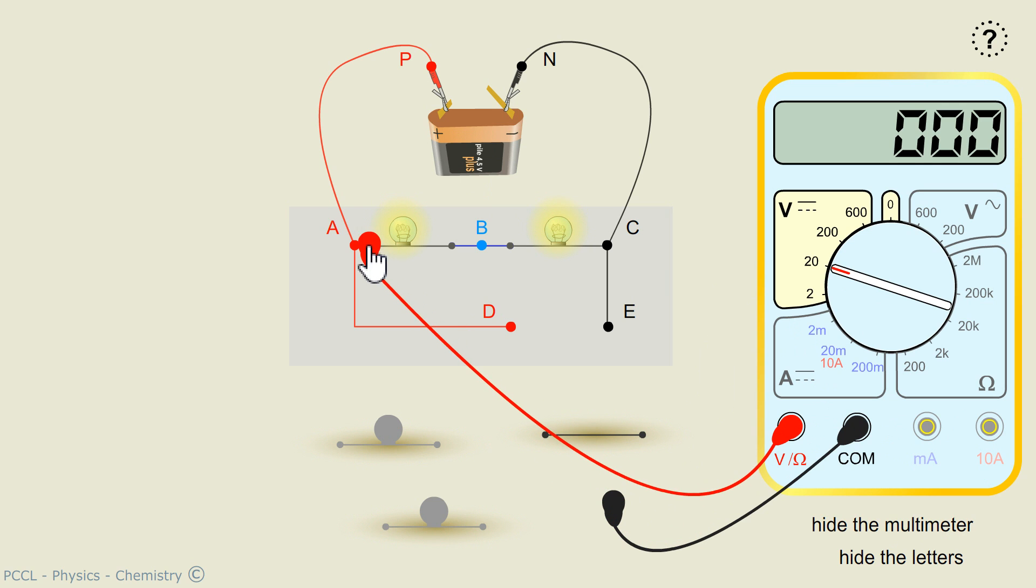I respect the instructions. VAB first gives me 2.24 volts.